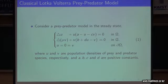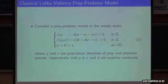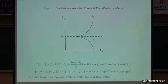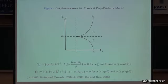In the first equation, U can be regarded as the amount of food for the predator. In this model, there are several well-known results about the co-existence area for the classical prey-predator model. The co-existence area is determined by two curves, S1 and S2. The lower side of S2 and the upper side of S1 is the co-existence area for the prey-predator model.